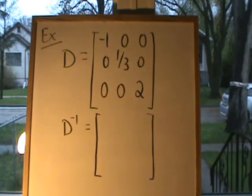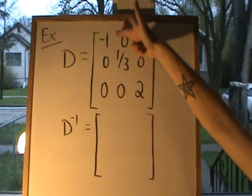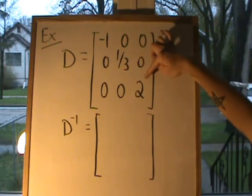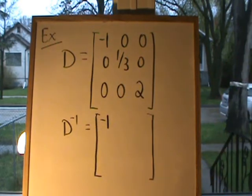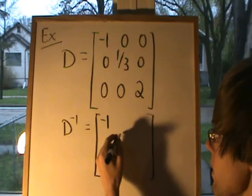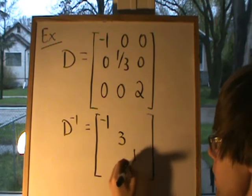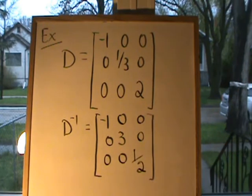Let's take a look at a quick example using a 3 by 3 diagonal matrix D. I scan along the main diagonal — D is invertible because there is no 0 there. To find the inverse of D, it's just a matter of flipping those three numbers: minus 1 flips to minus 1, one-third flips to 3, and 2 flips to one-half. Fill in the rest of the entries as 0, and we have the inverse. It's pretty easy to find the inverse of a diagonal matrix.